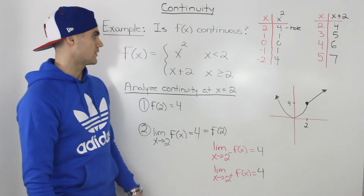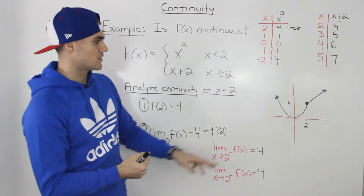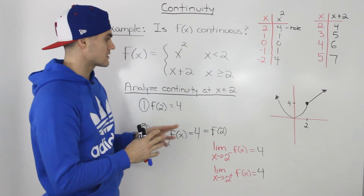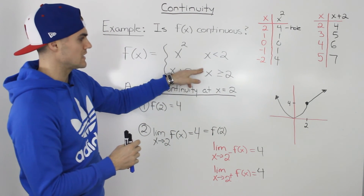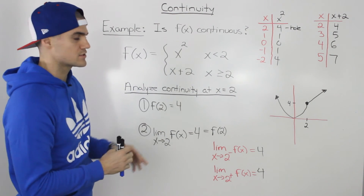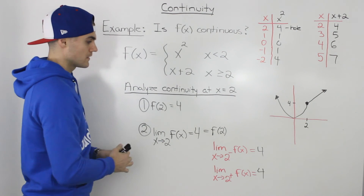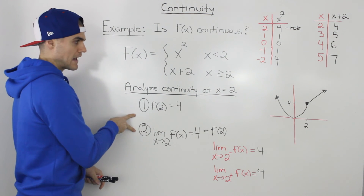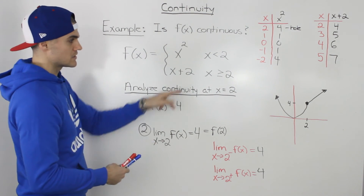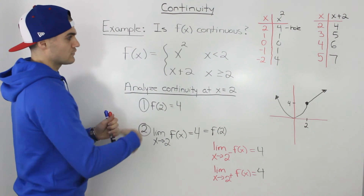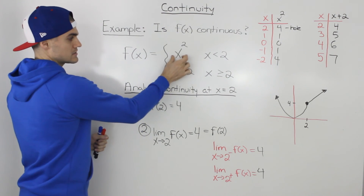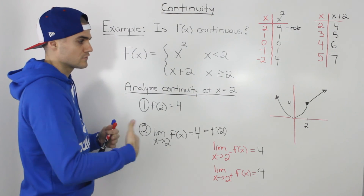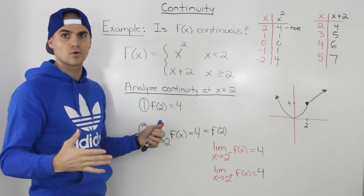In conclusion, whenever you get a piecewise function, first graph it so you can see it visually, then analyze continuity at any meeting points. Prove the two conditions at each meeting point. If those conditions pass and the individual pieces are continuous on the rest of their domain, then the function is continuous on its whole domain.